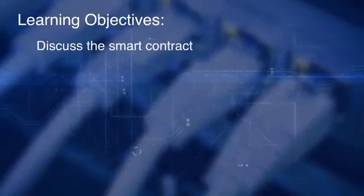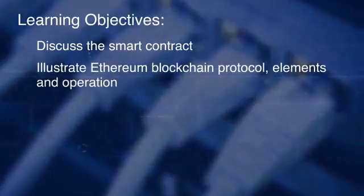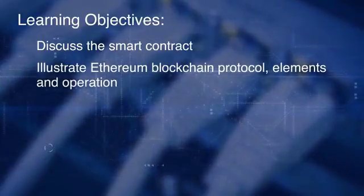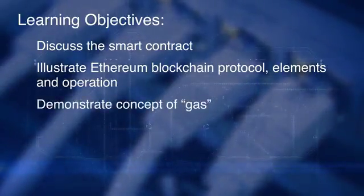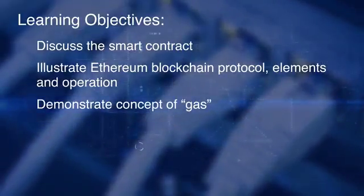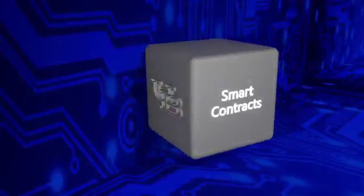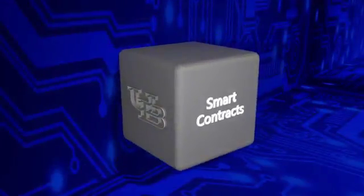In this module of course one, we provide a high-level overview of smart contracts as it relates to Ethereum. After completing this module, you will be able to discuss at a high level the innovation of the Ethereum blockchain — namely the smart contract — illustrate Ethereum blockchain protocol structural elements and operational aspects, demonstrate the concept of gas, the fuel or the payment model for code execution, and the incentive model for the Ethereum blockchain.